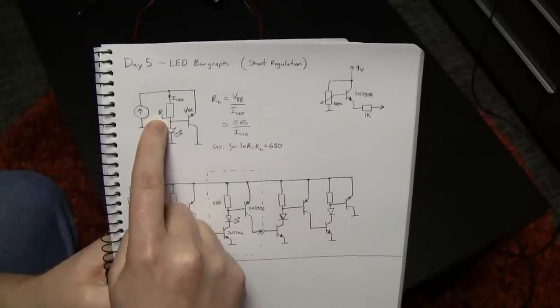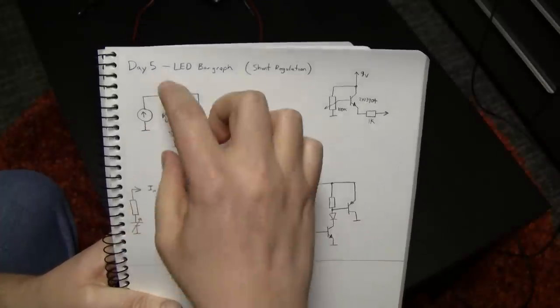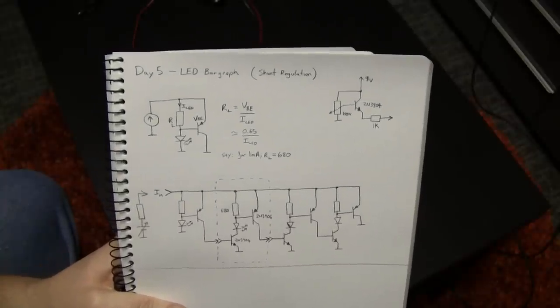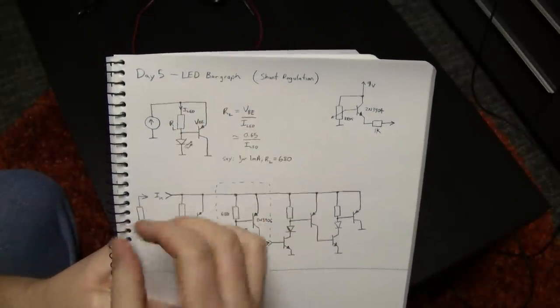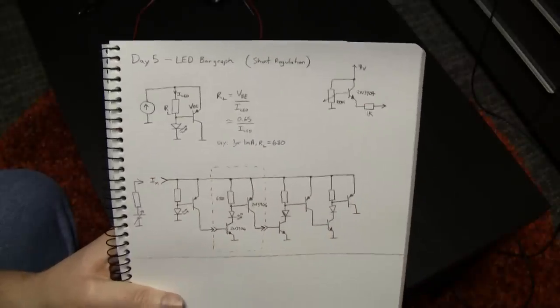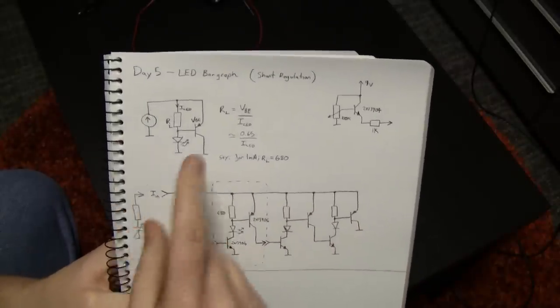So here we have an LED. We have a resistor in series with it. Normally you put this across a voltage source and you'd set that resistor such that the maximum current through the LED based on that voltage source, which in that case would be constant, would be just normal Ohm's law kind of stuff.